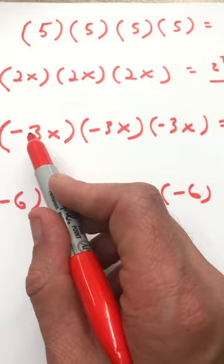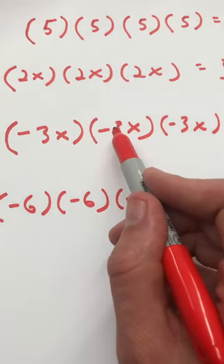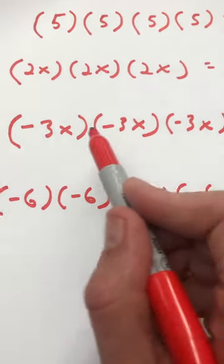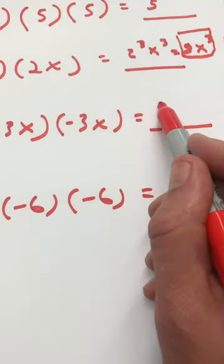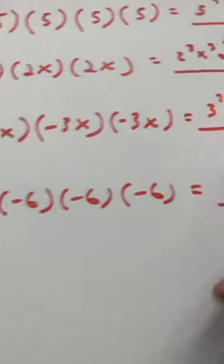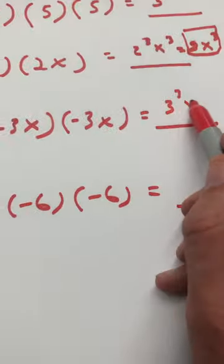Now, with negative signs, if we have negative 3x times negative 3x times negative 3x, let's think about this. 3 times 3 times 3 would be 3 to the third power, and x times x times x is x to the third power.